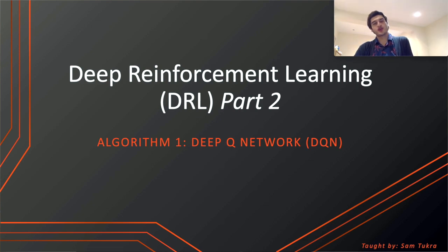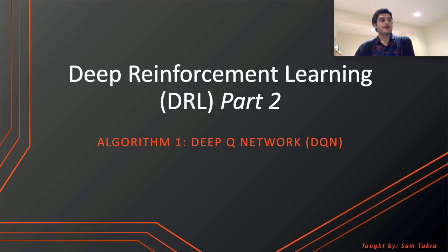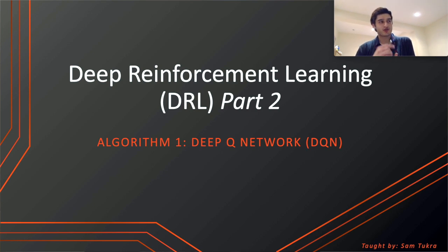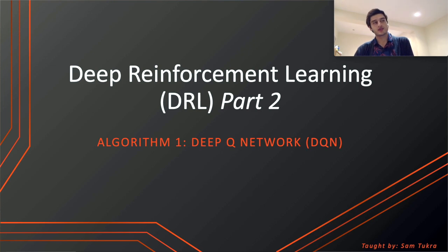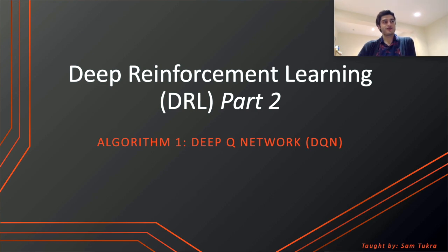Hello everyone, thank you very much for joining. I just want to say thank you for your support, your subscription, and the likes you gave for the video. We're continuing with deep reinforcement learning with part two. In the previous video, we defined the reinforcement learning problem, and in this one we're going to introduce the first algorithm we're going to use to solve that problem, and the algorithm is DQN — deep Q-network — which became really famous with the DeepMind paper where they showed they can use DQN to play Atari games at superhuman level. So without any further ado, let's get started.